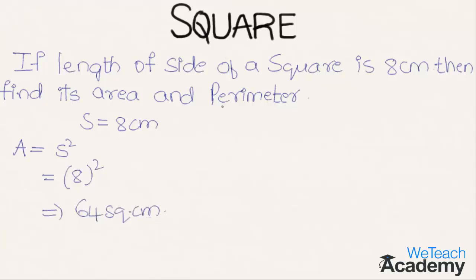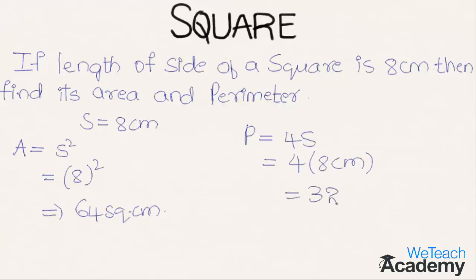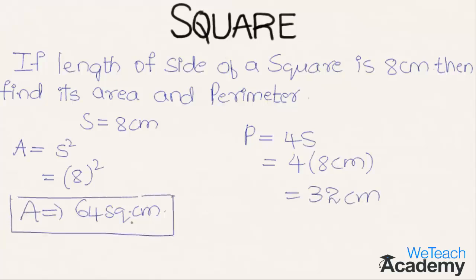For the perimeter, we know the formula is 4s. Substituting the value of s, we get 4 × 8 = 32 centimeters. So the area is 64 square centimeters and the perimeter is 32 centimeters.